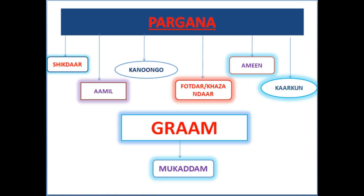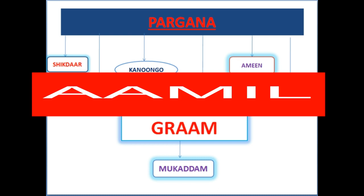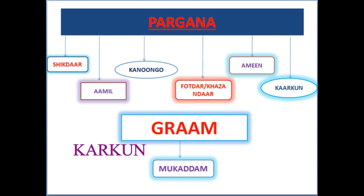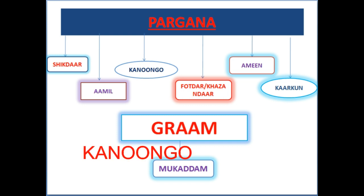The main duty of the Amil was to collect revenue from the Pargana. There were also other officers called Carcune, who were clerks assisting the Amil. Another revenue officer was the Kanungo, whose duty was to maintain a register of the collected revenue and outstanding revenue amounts.